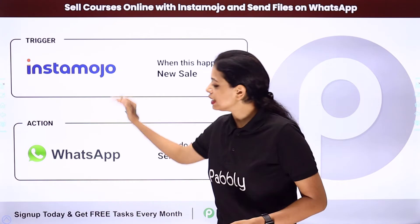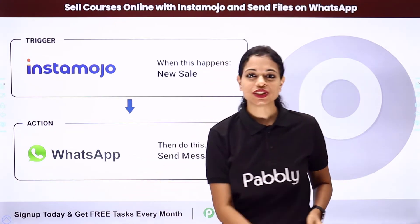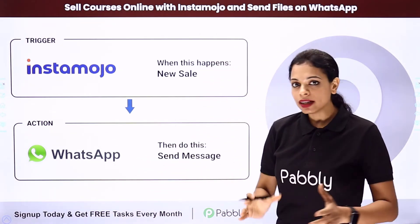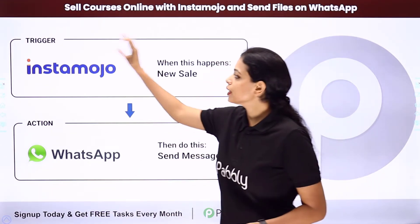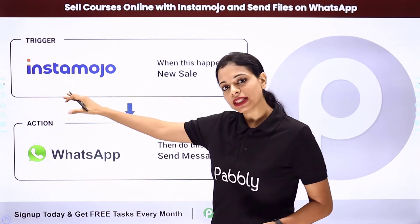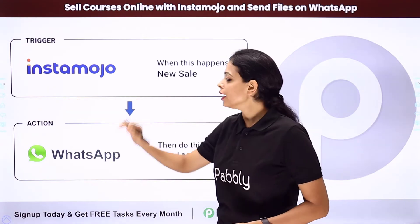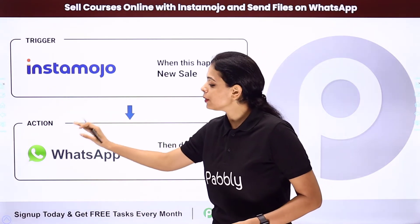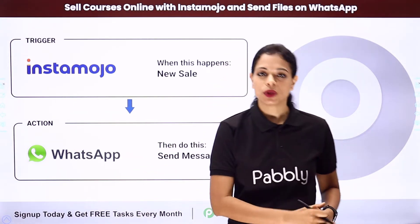You can integrate these two applications using Pabbly Connect. Here your trigger application would be Instamojo and your action application would be WhatsApp.